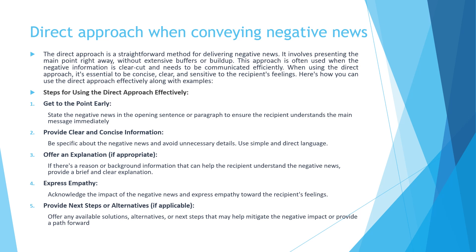Now let's go over the direct approach when conveying negative news. The direct approach is effective for situations where clarity and efficiency are crucial. This method prioritizes transparency — making it clear from the outset what the news is — while still maintaining sensitivity to the recipient's feelings. Step one is to get to the point early: state the negative news in the opening sentence or paragraph. For example: 'I'm sorry to inform you that your application for this position has been declined.' By stating the main point up front, the recipient understands immediately, reducing anxiety about what the news might be.